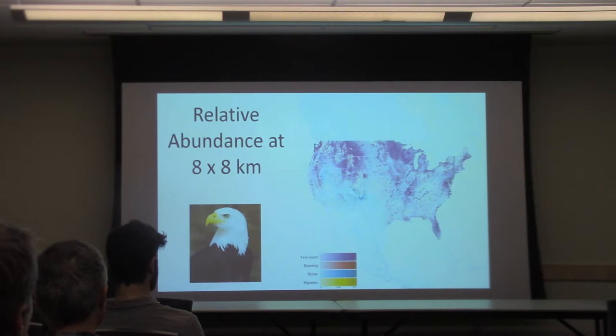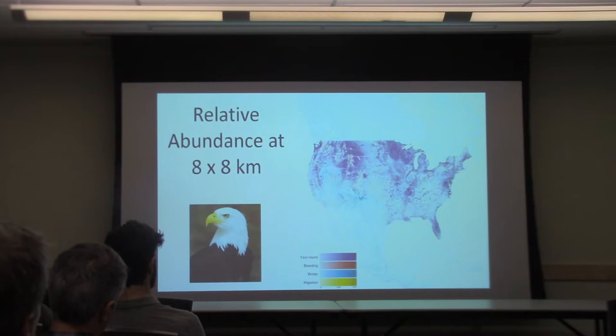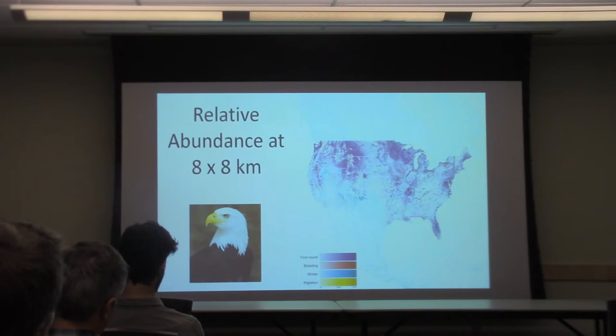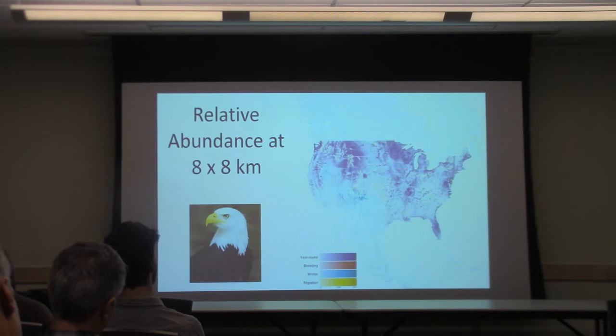So we were able to put together some of these products for them. The wood thrush map I showed earlier was at 25 by 25 kilometers as part of the basic production run, but for a lot of species and regions we can get much smaller than that. For bald and golden eagles, we can get down to eight by eight kilometers. We can show relative abundance year-round, or pull out just winter, breeding season, or one of the migration seasons. The seasons are defined by species experts — not arbitrary dates — so for bald eagles, experts defined when breeding starts, and that's when our breeding season data starts.